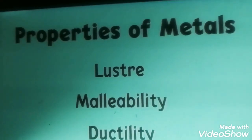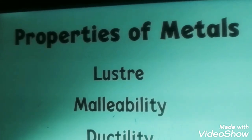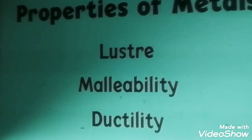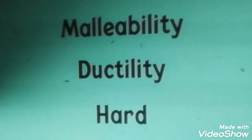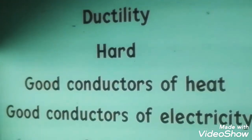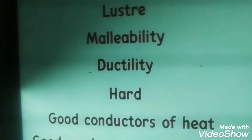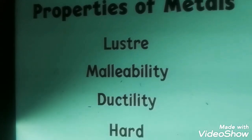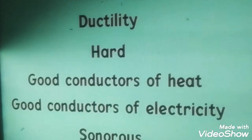Let's once again see the properties of metals. First: metals have luster property — metals are lustrous. Second: metals have the property of malleability — they can be beaten into thin sheets. Third: metals are ductile — they have the property of ductility, meaning they can be drawn into thin wires. Next: metals are hard. Metals are good conductors of heat and also good conductors of electricity. And metals are sonorous — they have the property of sonority.